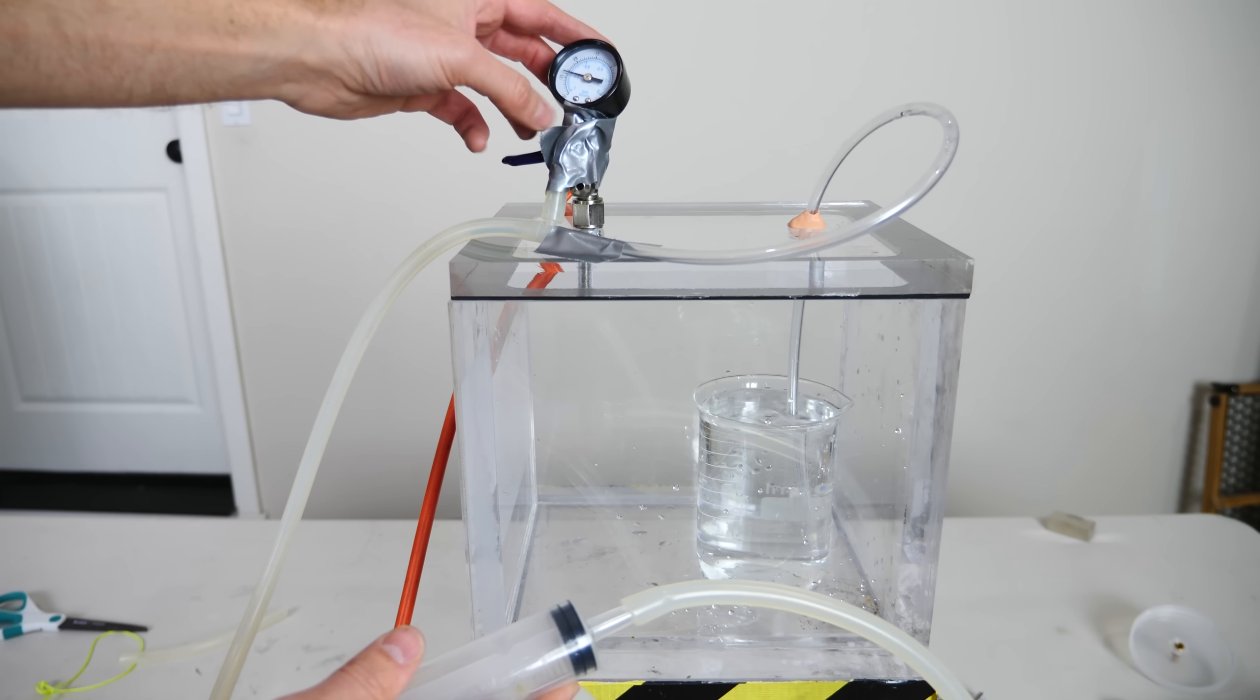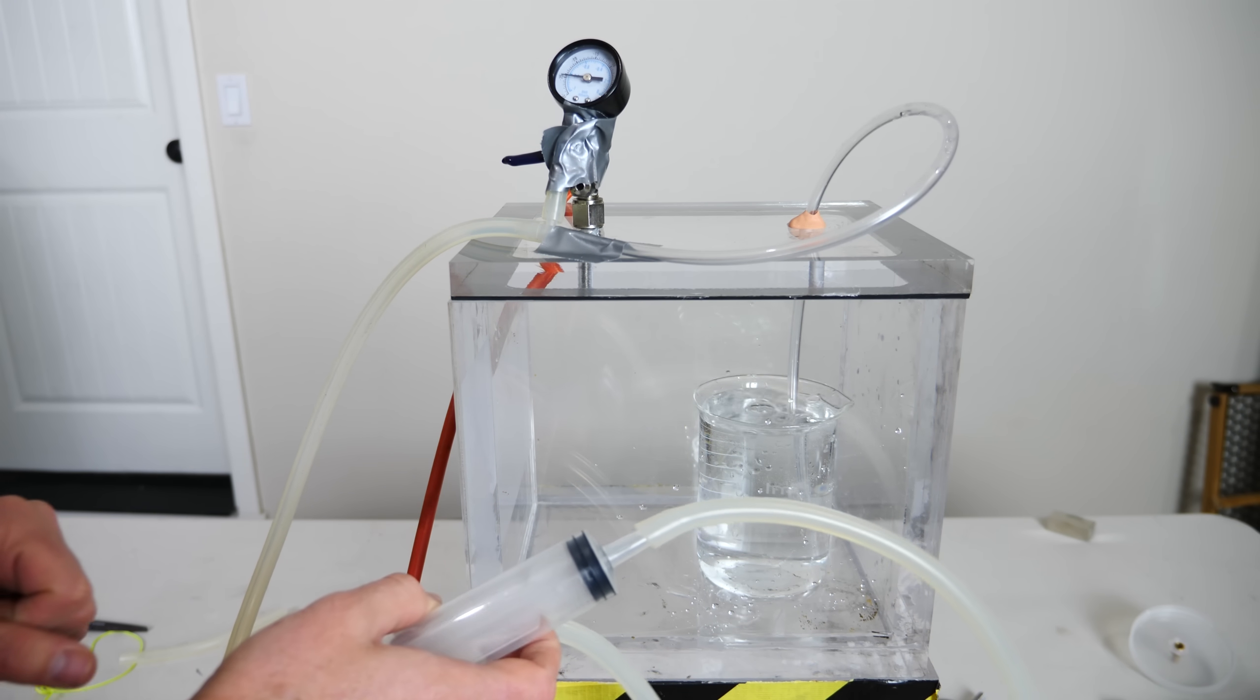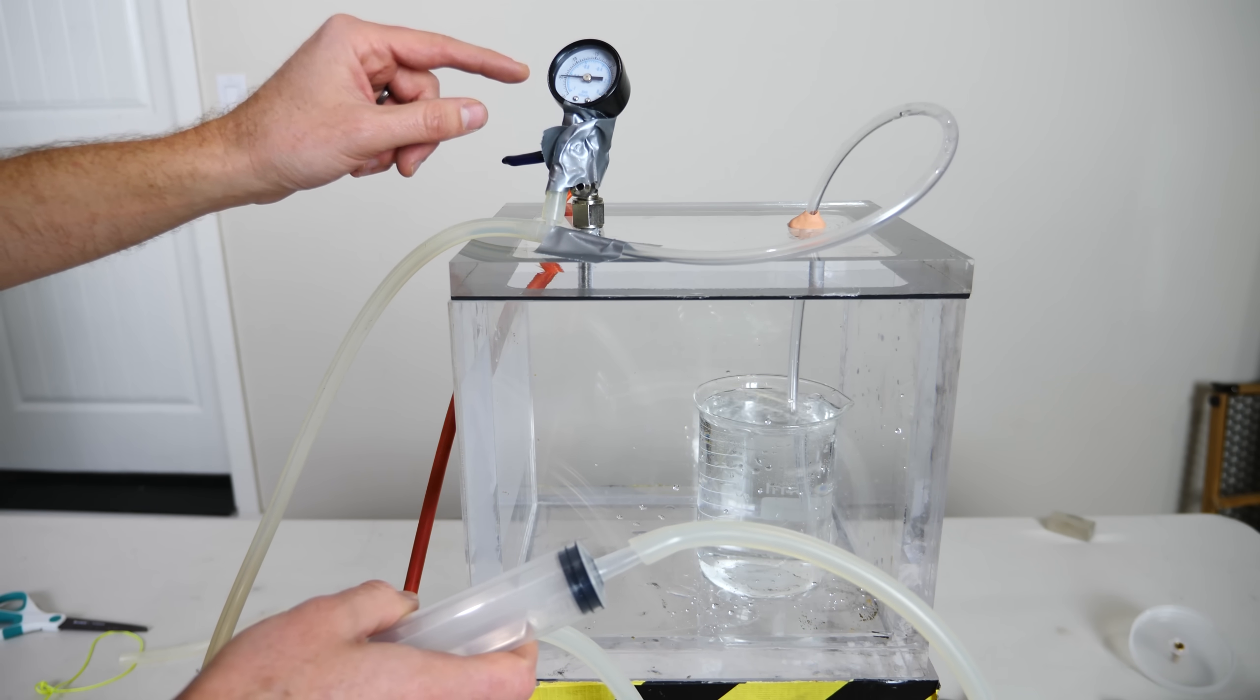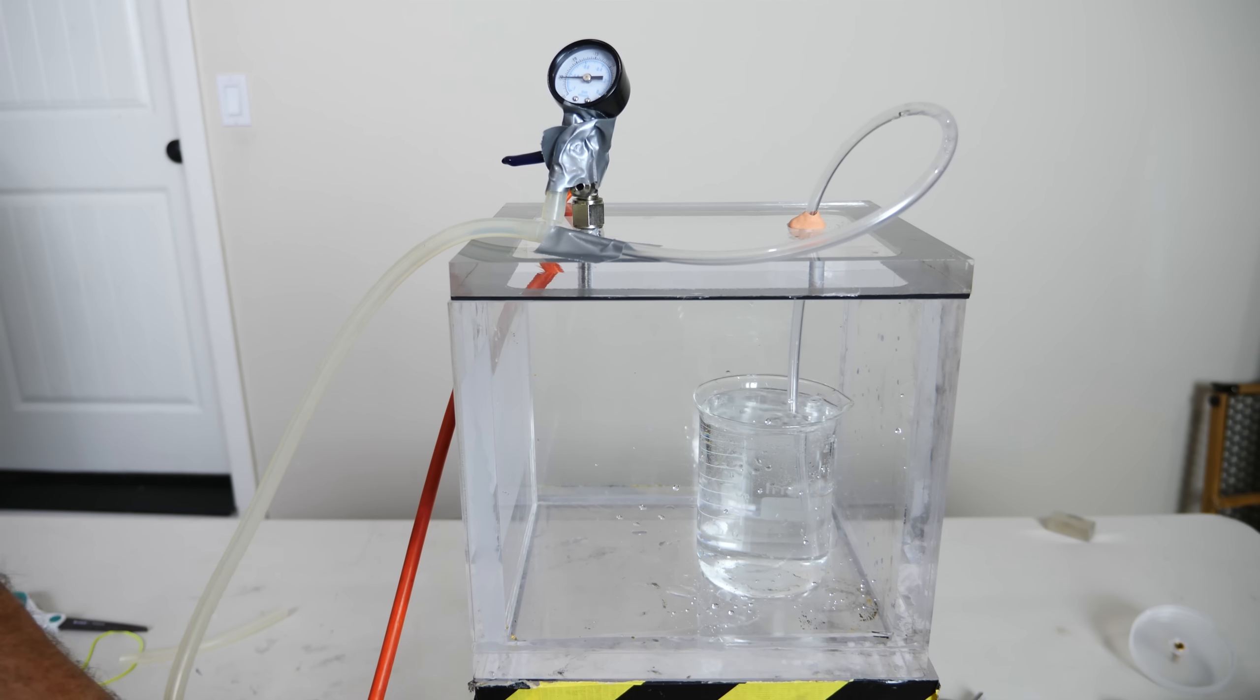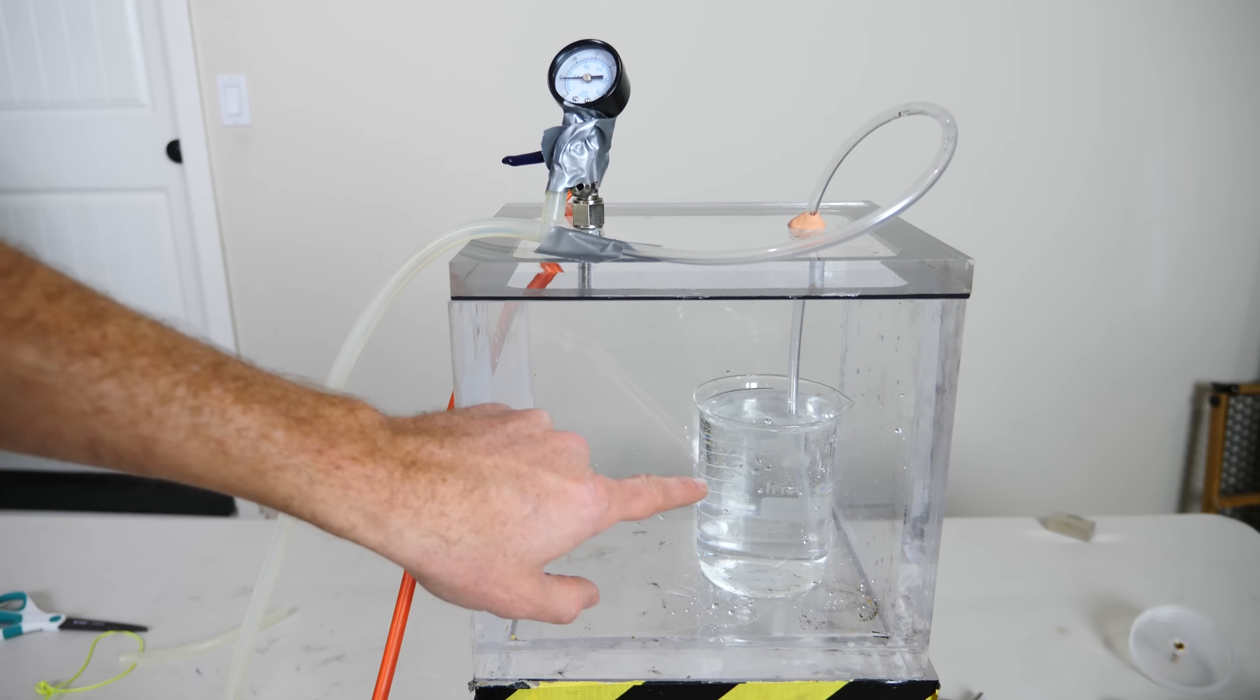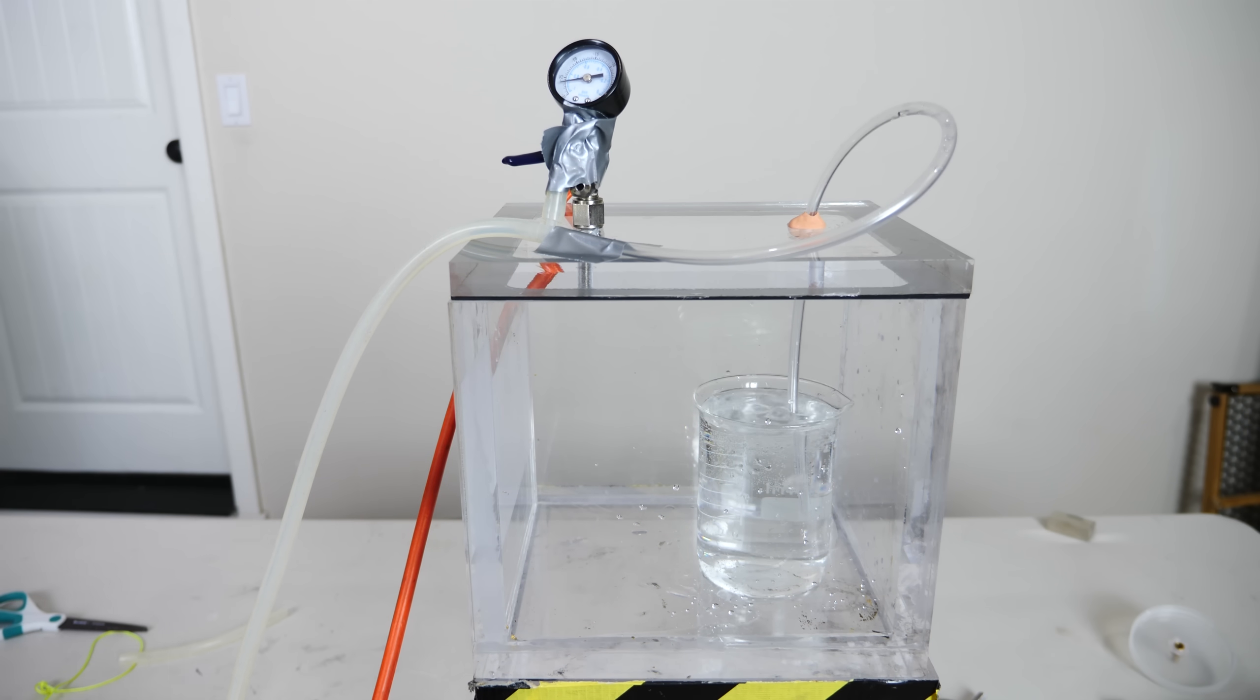So we're already at three-fourths of a full vacuum here, only around 0.1 atmospheres in there. As we get to lower and lower pressures you can see that the dissolved air in the water is starting to come out. You can see those little bubbles there.